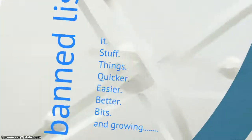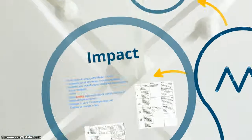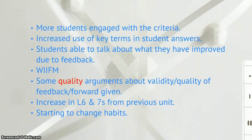We also started to include something I use in my classes called the ban list — a group of words that we do not use in answers if we can use a keyword instead. That's the ban list at the moment; it's getting bigger. And we started to see an impact. Students were a lot clearer about what I was looking for. Because they were looking for success criteria in others' work, they were more likely to include it in their own. They were using key terms in student answers instead of the ban list.